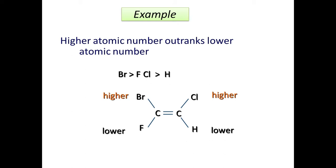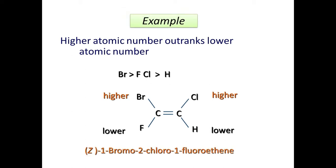Applying the CIP rule: the highest atomic number outranks the lower. On a carbon-carbon double bond with bromine and fluorine on one carbon and chlorine and hydrogen on the other — bromine has highest priority over fluorine; chlorine has higher priority than hydrogen. E stands for 'entgegen' (opposite sides) and Z stands for 'zusammen' (same side). When higher priority groups are on opposite sides, it is E; when on the same side, it is Z.